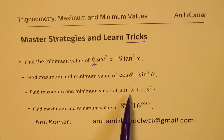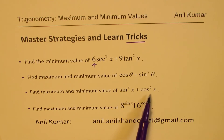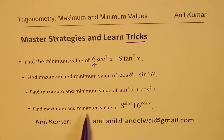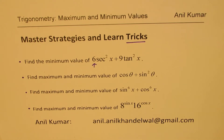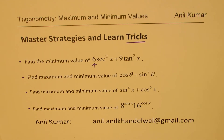The third question is sine to the power of 6x plus cos to the power of 6x. This is not a straightforward question — we'll use the formula for a cubed plus b cubed to solve it. The fourth question is to find the maximum and minimum value of 8 to the power of sine x times 16 to the power of cos x. There's a trick to solve this immediately, so two of these questions you can straight away write down the answers.